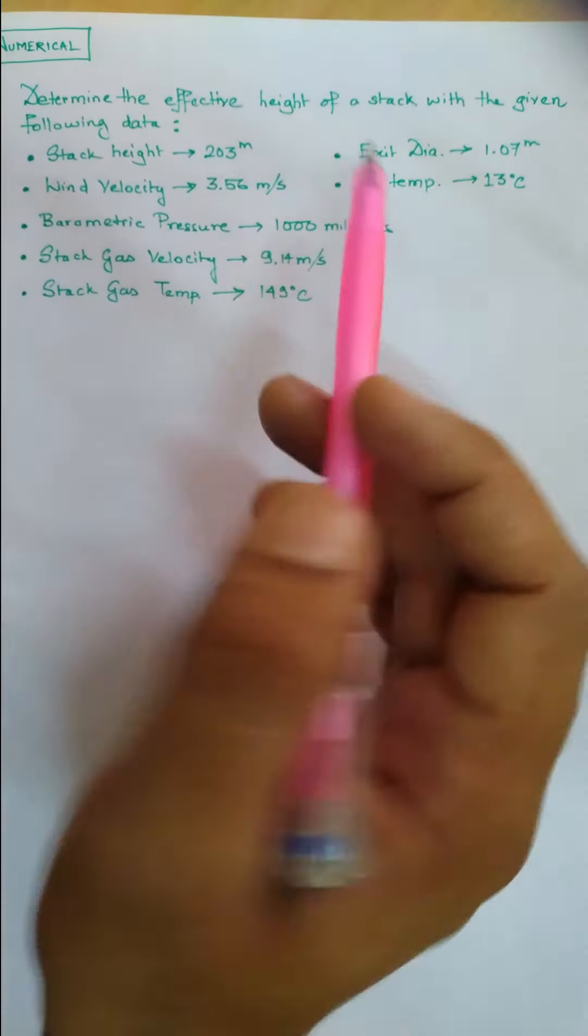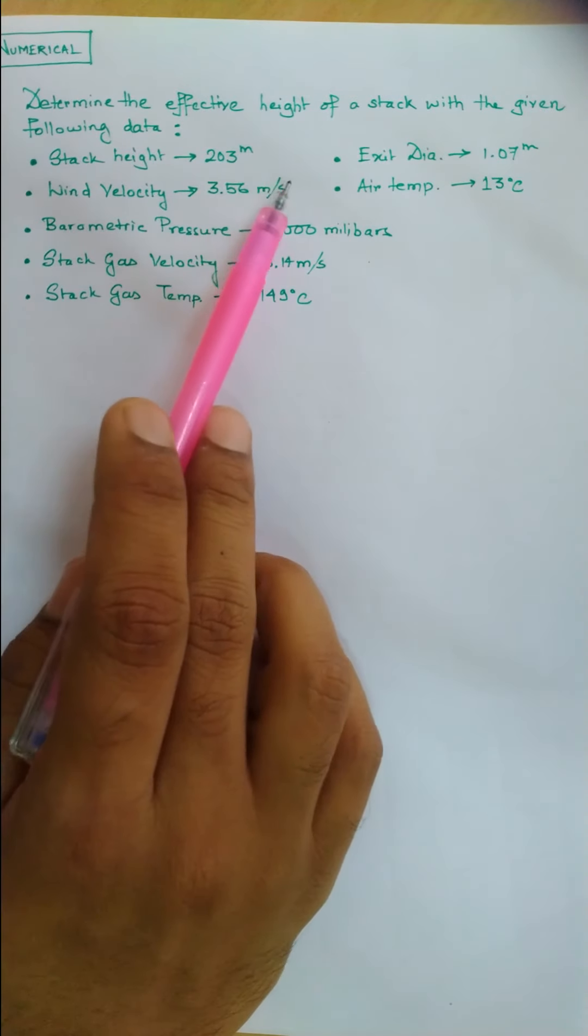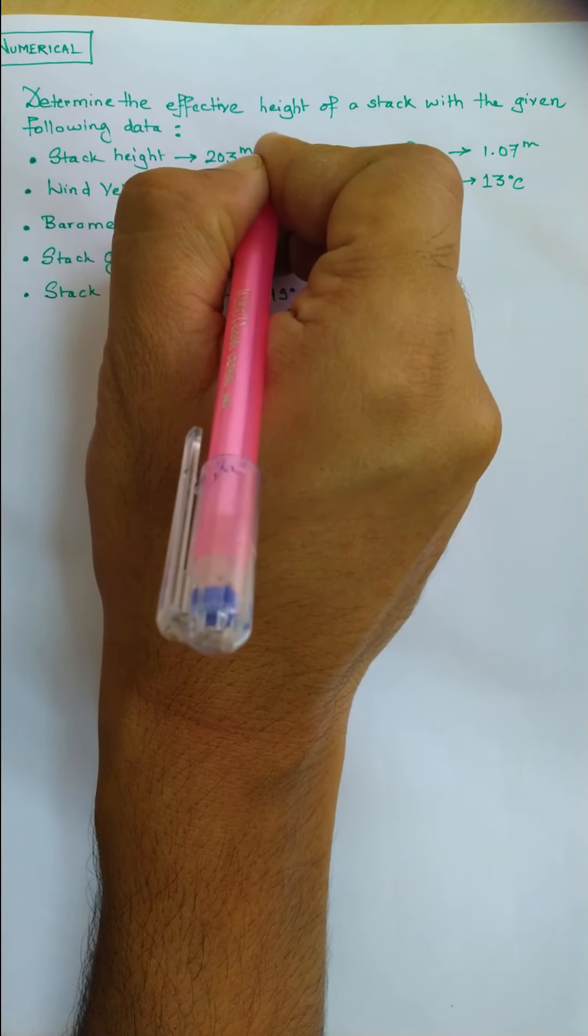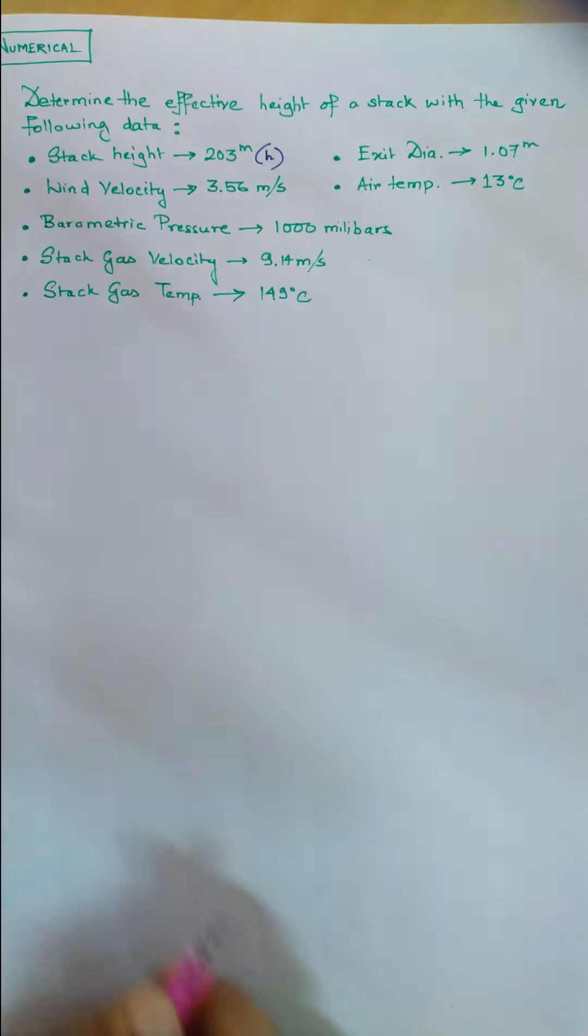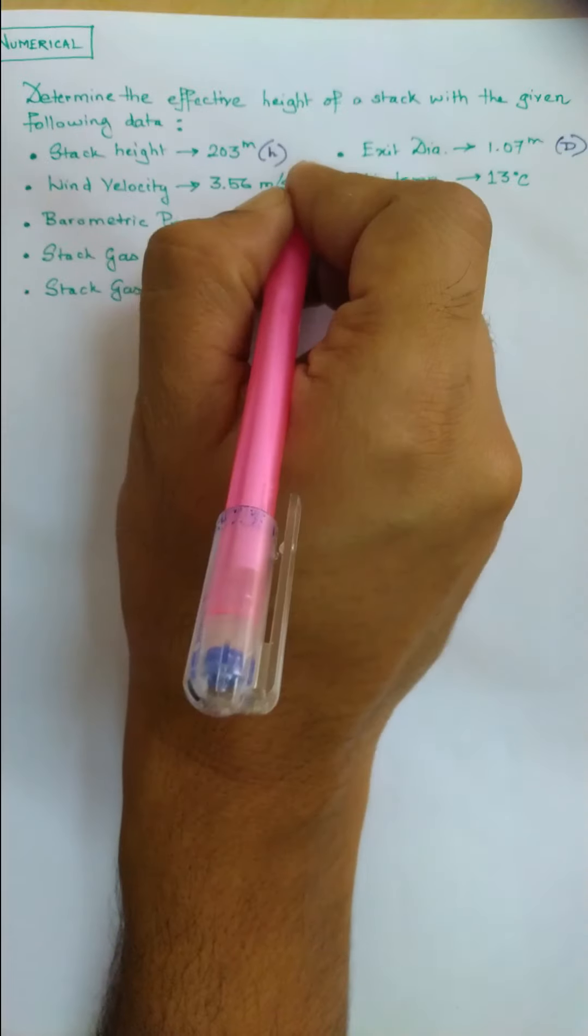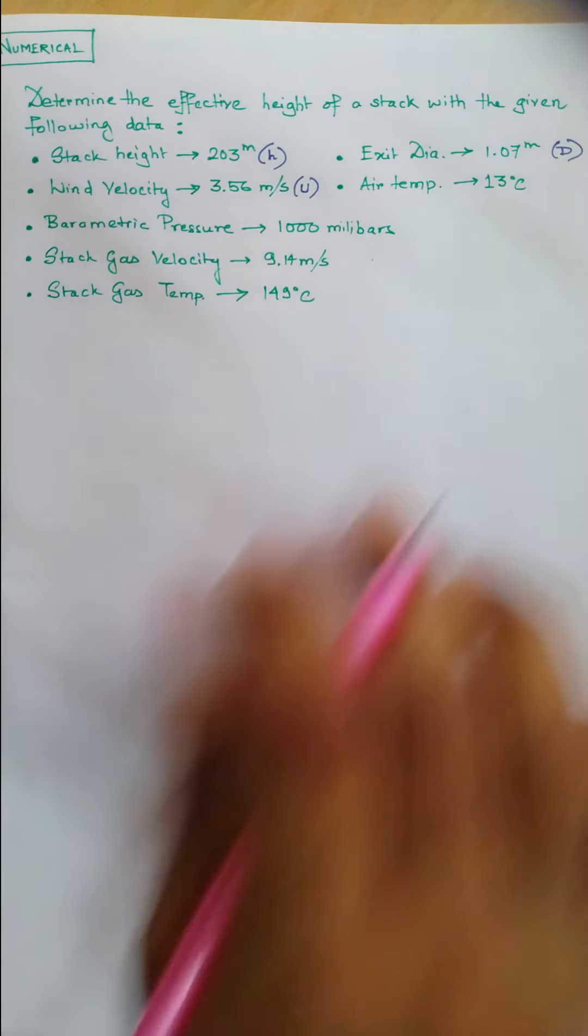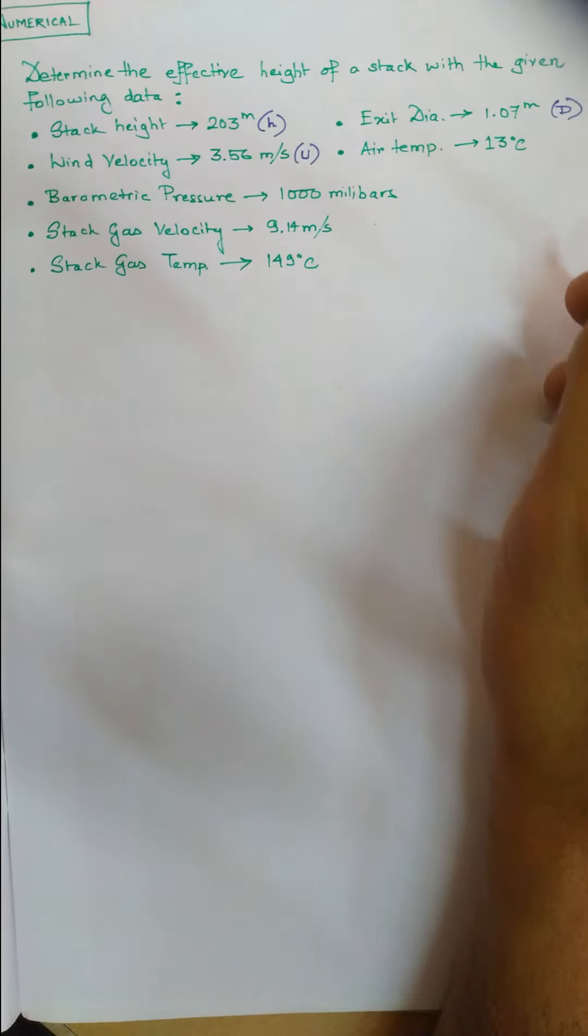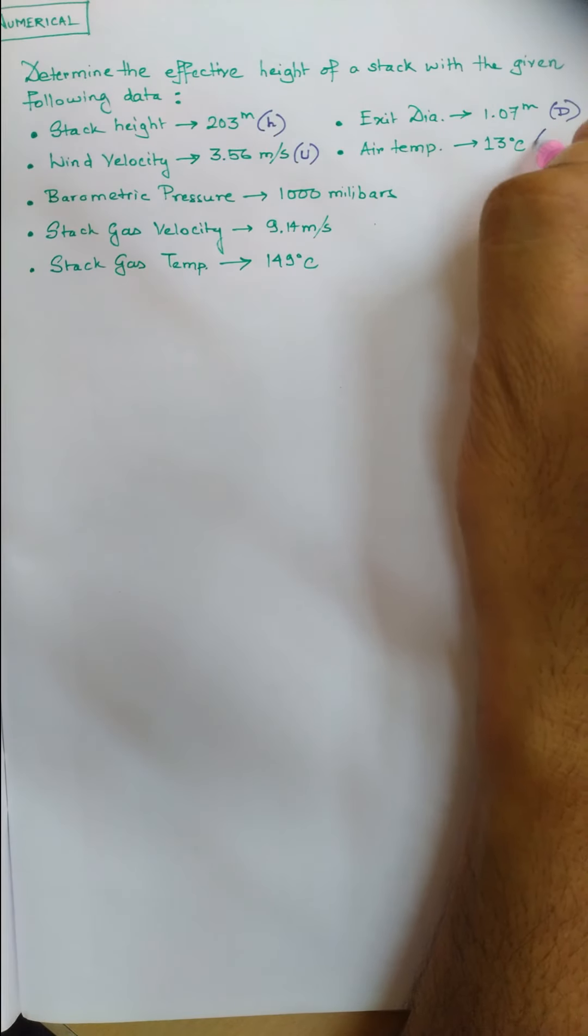We have a few data: stack height which is small h, exit diameter which is d, wind velocity which is u, and air temperature. The air temperature is the ambient temperature, so please take note of this ambient temperature.